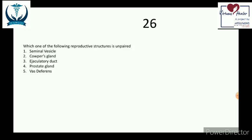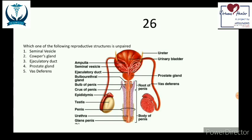In your A-level paper you must be able to list the main structures and their functions of the male and female reproductive system. Let us take a brief moment and go through the male reproductive system along with their functions. We will start at the testis, which lies in a scrotal sac.